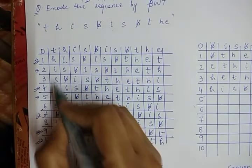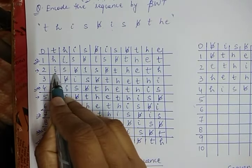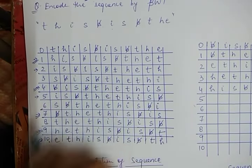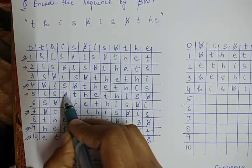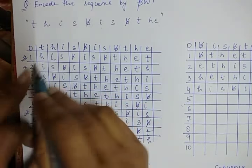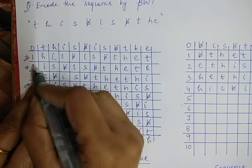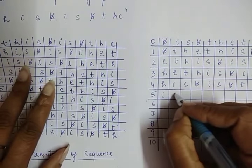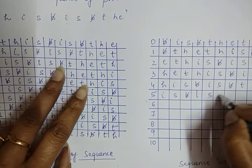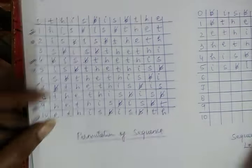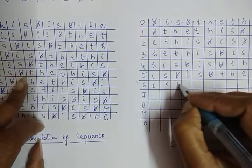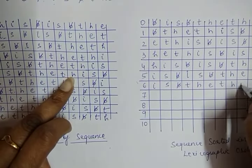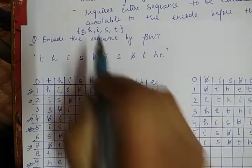Next, 'i' comes at positions two and five. They share the same second symbol 's', same third symbol 'b space', but at the fourth position we have 'i' vs 't' — 'i' comes first. So position two goes to place five: 'i s b space i s b space t h e t h'. Position five then goes to place six: 'i s b space i s b space t h i s b space'.